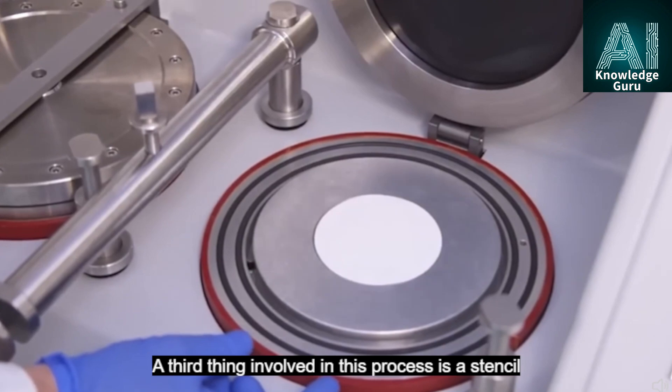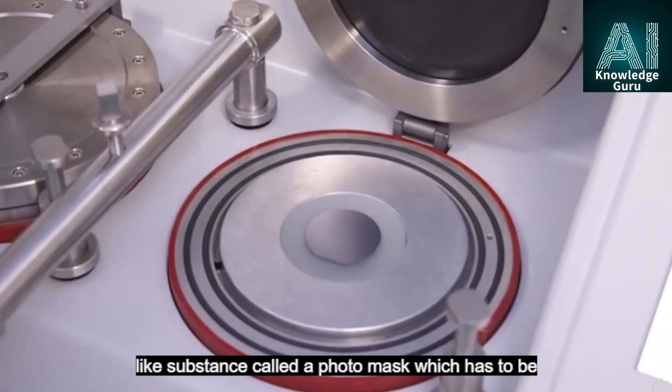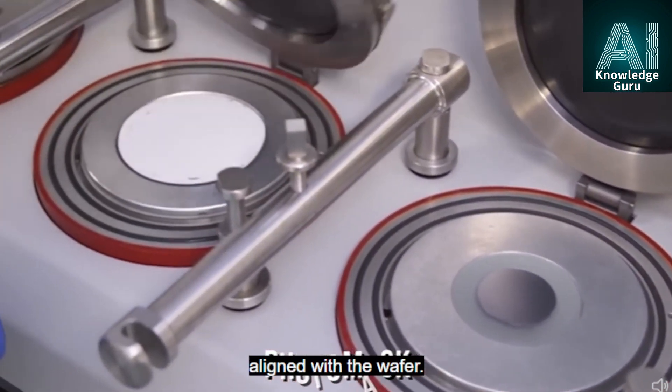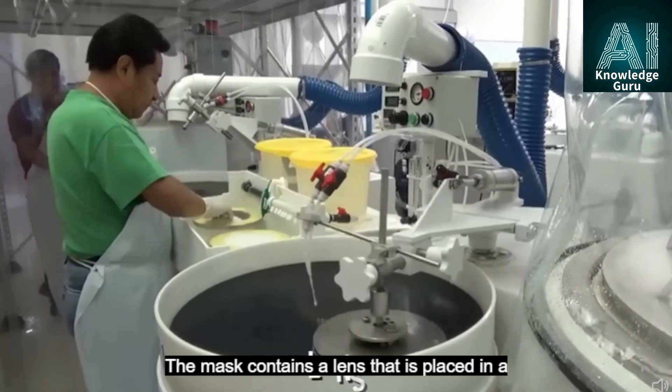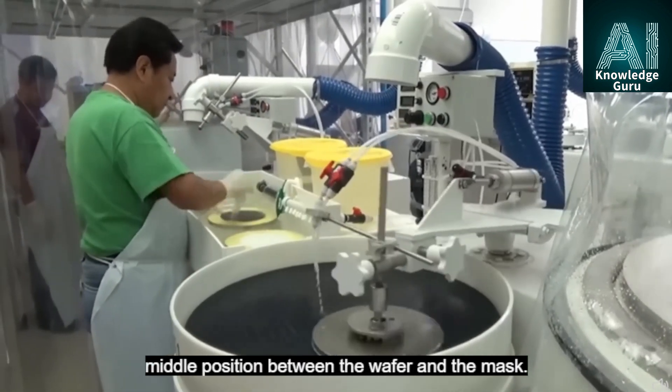A third thing involved in this process is a stencil-like substance called a photo mask which has to be aligned with the wafer. The mask contains a lens that is placed in a middle position between the wafer and the mask.